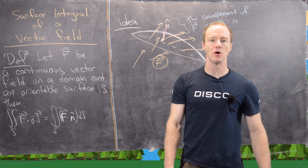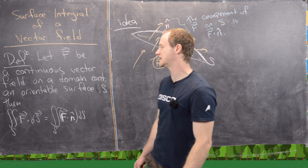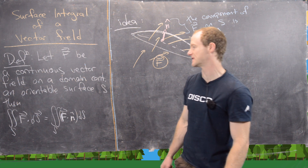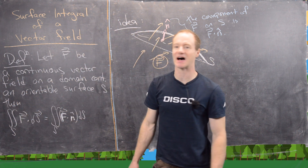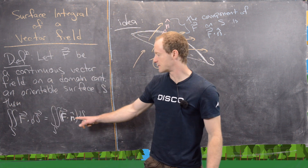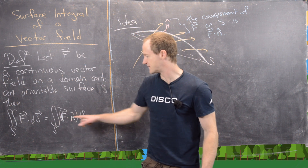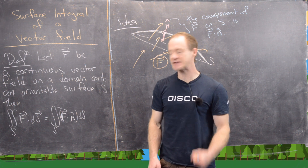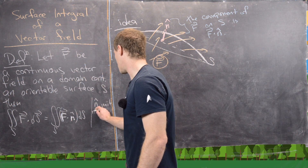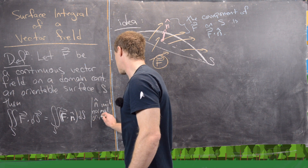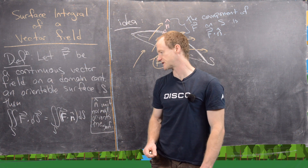Here's the definition, which I'll motivate in just a second, and then we'll also build a more calculatable result. Let F be a continuous vector field on a domain containing an orientable surface S. Then the surface integral over S of F dot dS — the surface integral of the vector field — is equal to the scalar surface integral of F dot n, where n is the unit normal that orients the surface.